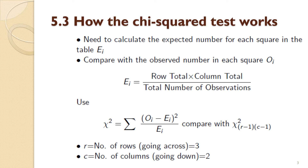A large chi-square statistic will ultimately enable you to reject the null hypothesis if there is a big difference between the observed and expected numbers. Here, R is the number of rows going across — which is three on the previous slide — and C is the number of columns going down, which would be two on the previous slide.